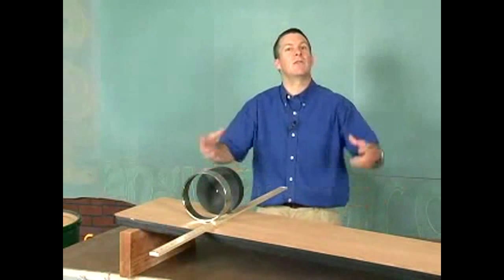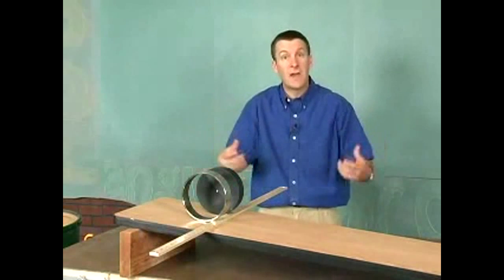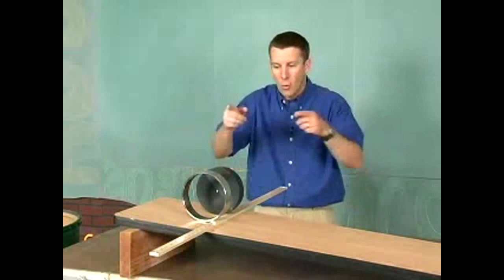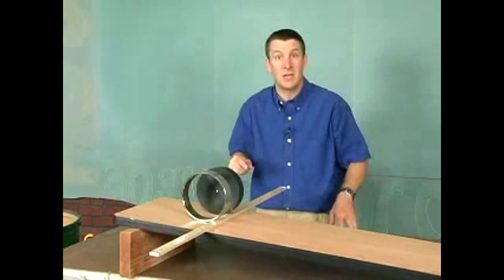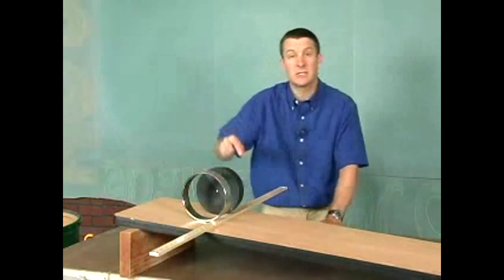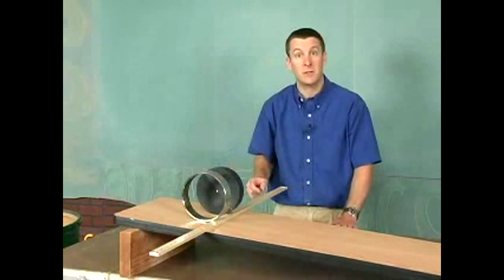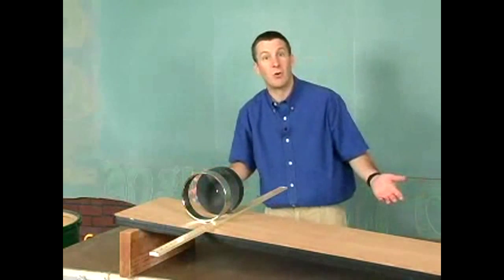Well, we've seen how the distribution of mass affects the motion of an object. So my question to you is, will they both meet at the bottom of the hill together? Or will the ring beat the disk to the bottom? Or will the disk beat the ring to the bottom? Let's check it out. Make a prediction real quick. What do you think? Ring, disk, or same?